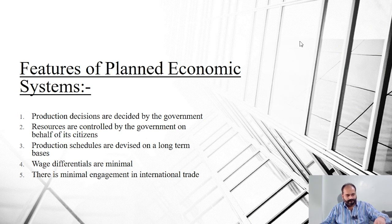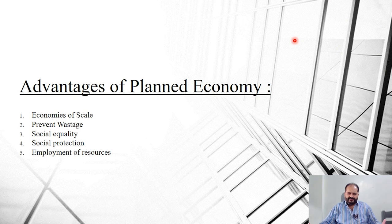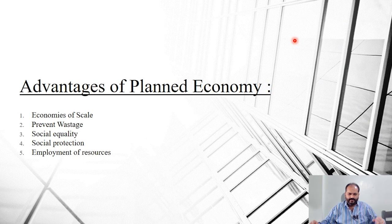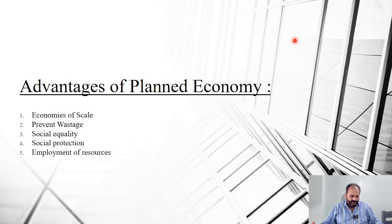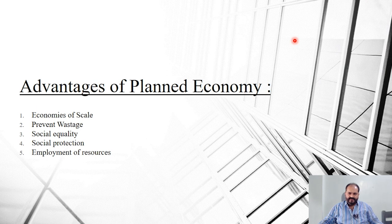Now, the advantages of the planned economic system. Since there is no competition and nobody is focused on making better products or giving better choices, you can reap better economies of scale — products are manufactured in mass at low costs. Number two is preventing wastage: when products are manufactured in masses, waste can also be reused in the production process, so wastage is minimum.